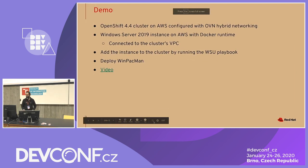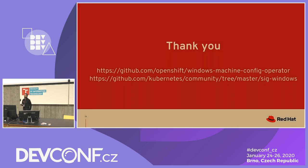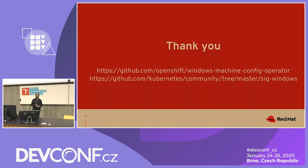Here are some useful links. One is our repo, the Windows Machine Config Operator, which will soon be renamed to Windows Machine Config Bootstrapper as we start fresh going down the operator model. SIG Windows is the special interest group in Kubernetes for upstream work — if you're interested in contributing, please join SIG Windows. They have a Slack channel on the Kubernetes Slack and weekly meetings.